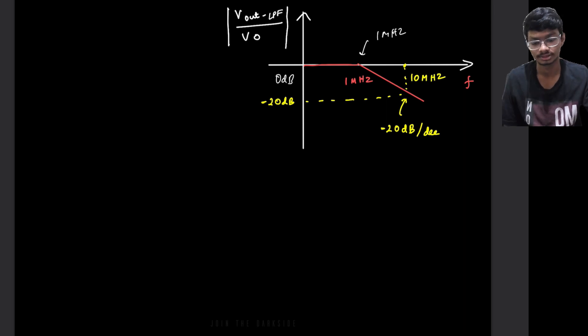This is the log of frequency. So what does this minus 20 dB per decade mean? For every decade of frequency the gain will decay by minus 20 dBs. So it goes from 0 to minus 20 dBs at 10 MHz.